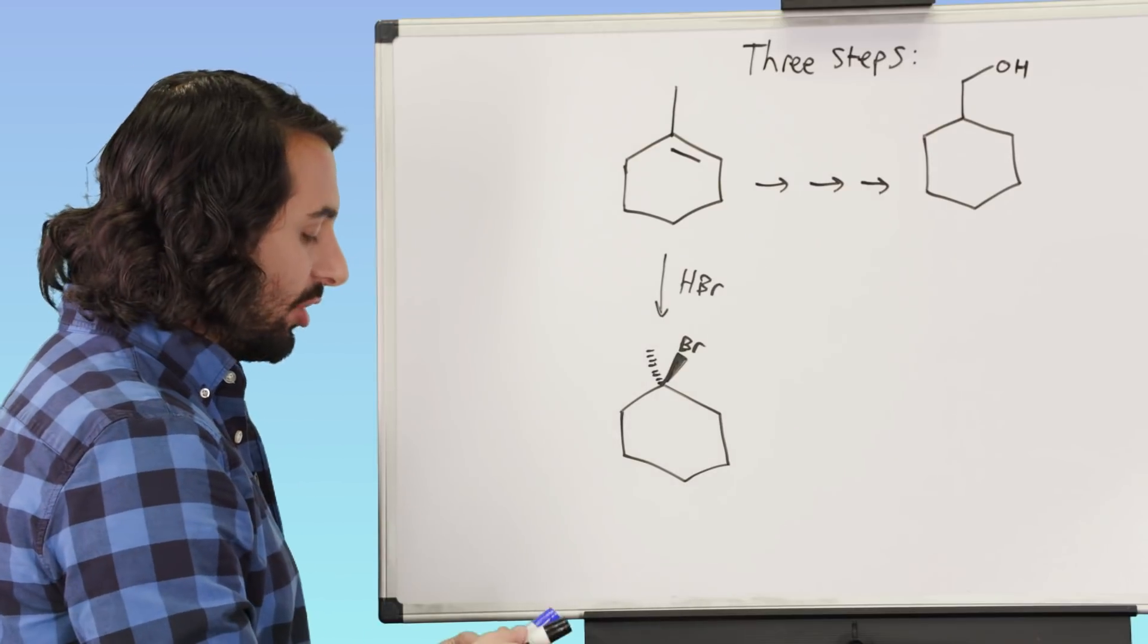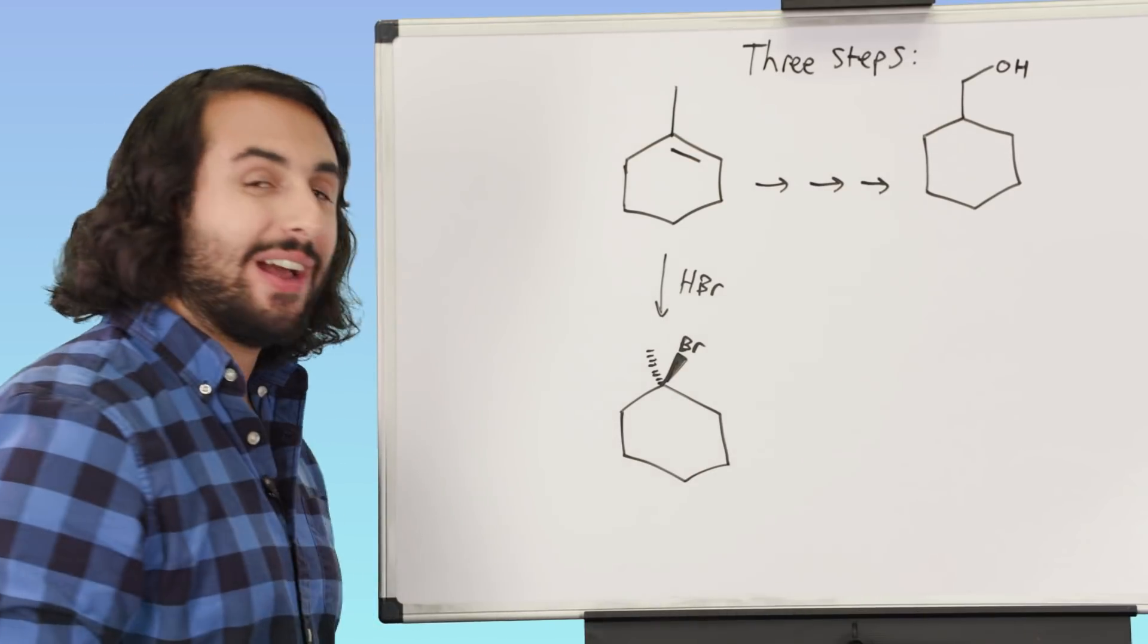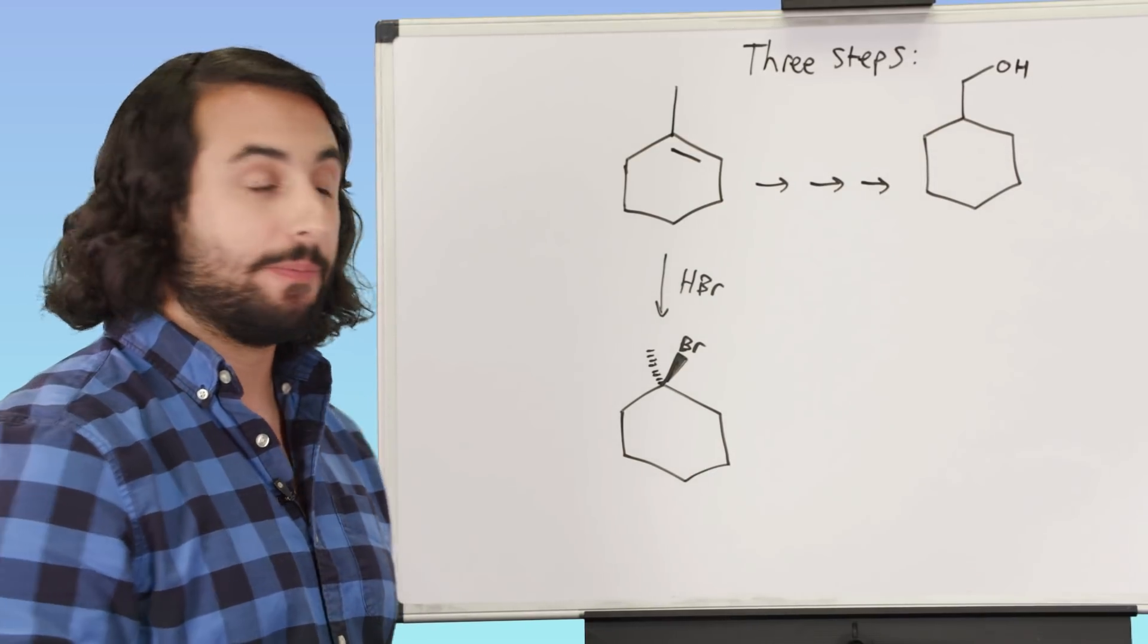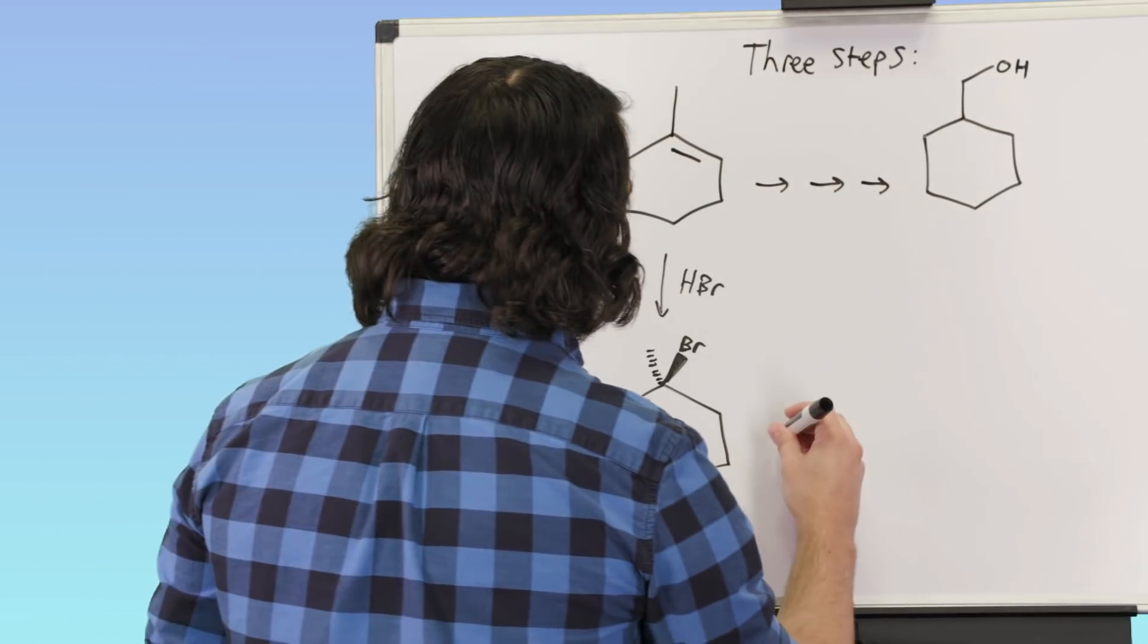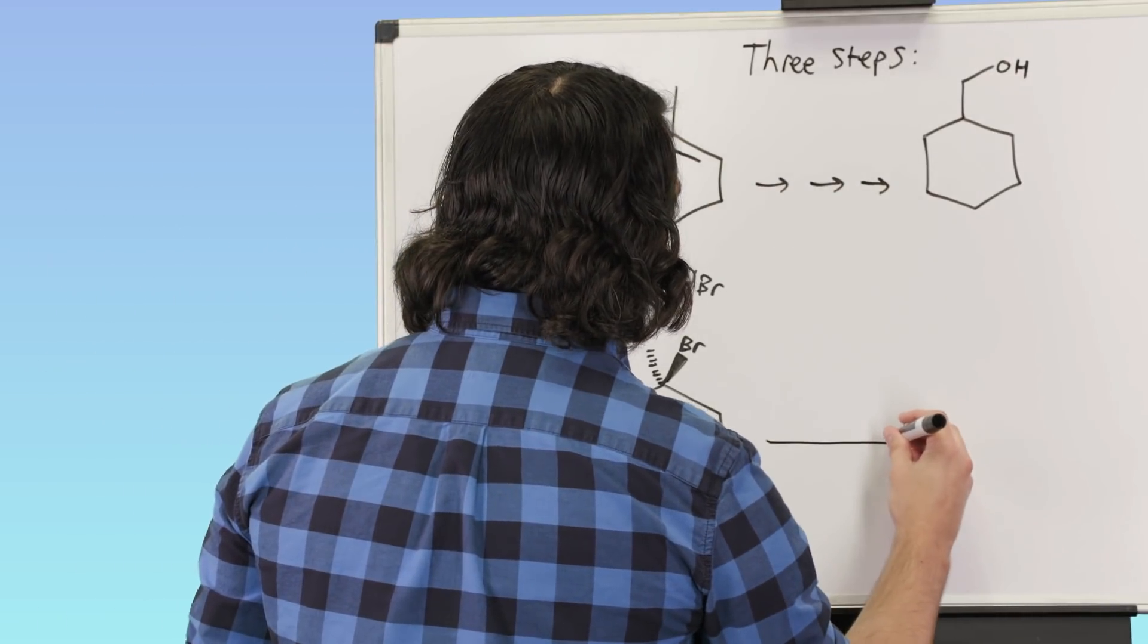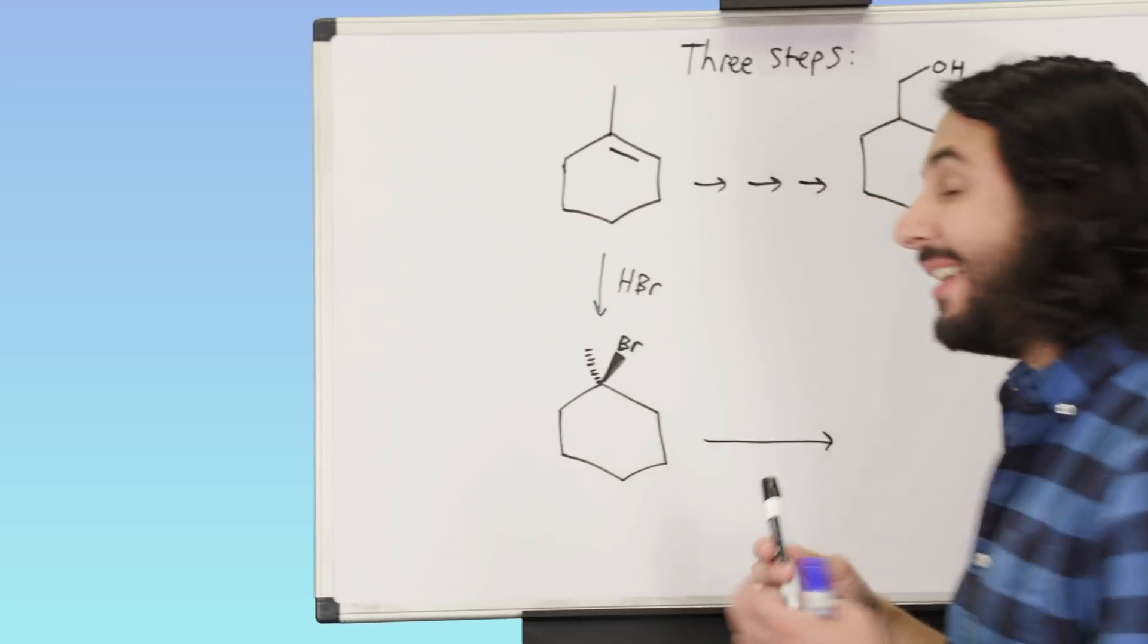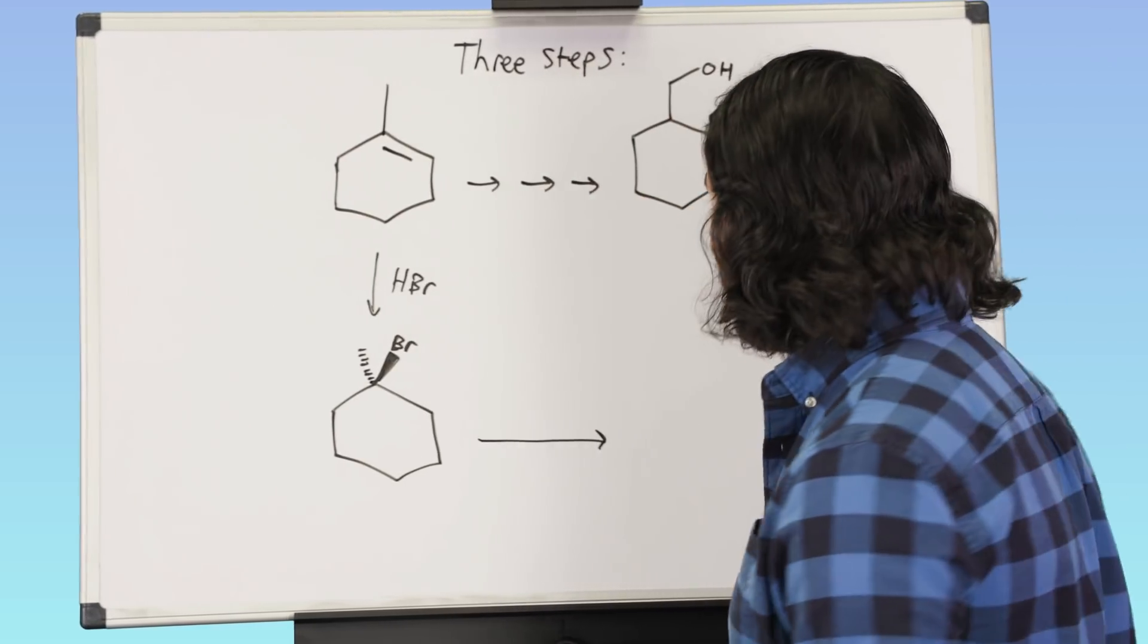So if we want to do an elimination though, we want to think about the regiochemistry here. We want to think about what kind of elimination, because depending on what kind of base we use, we could get some different products, and so as it happens, we are going to want to use a very sterically hindered base. We're going to want to use a bulky base.